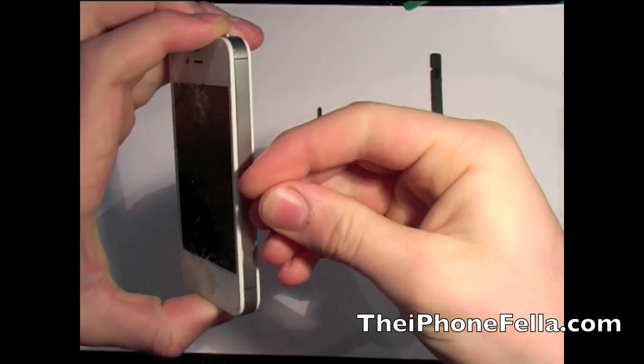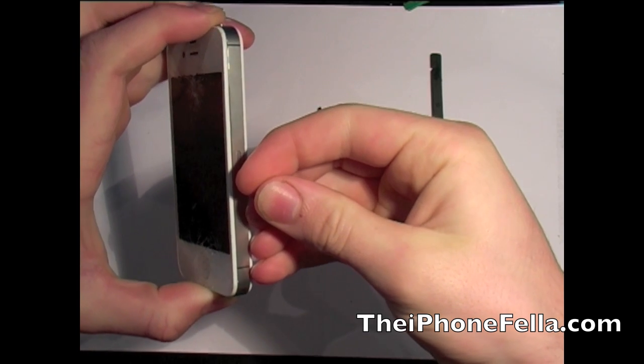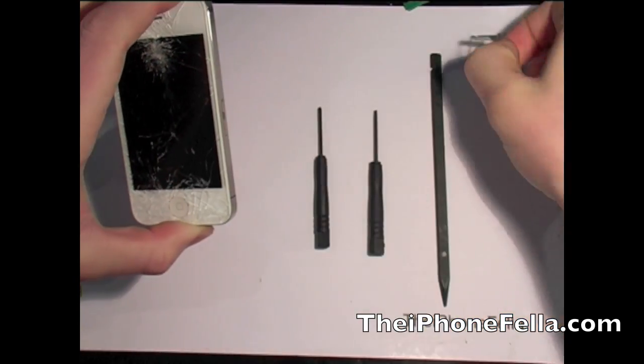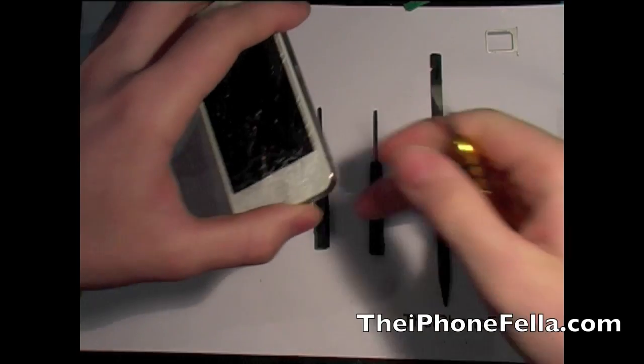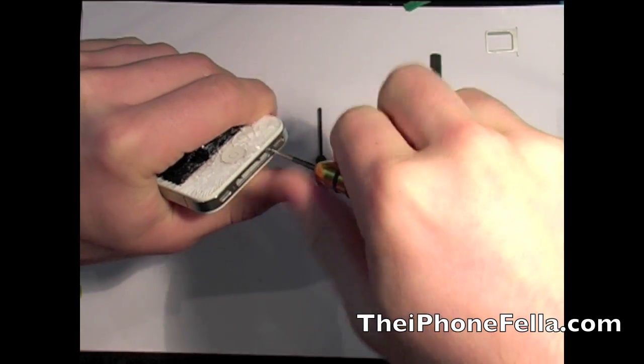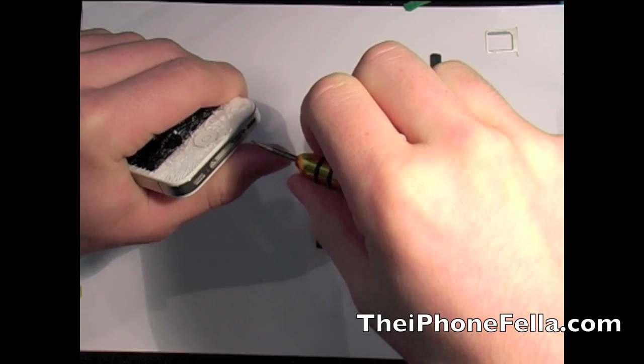To get started, go ahead and remove your SIM tray. Next, remove the two screws from the bottom. This will allow you to slide back and then lift up the back plate.